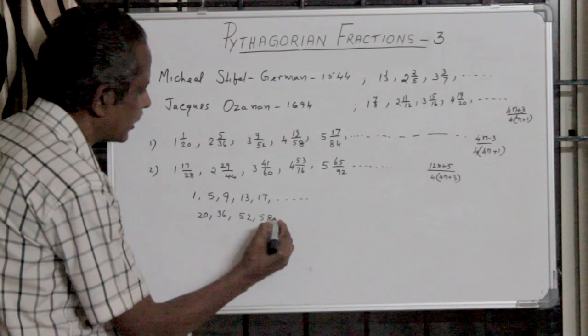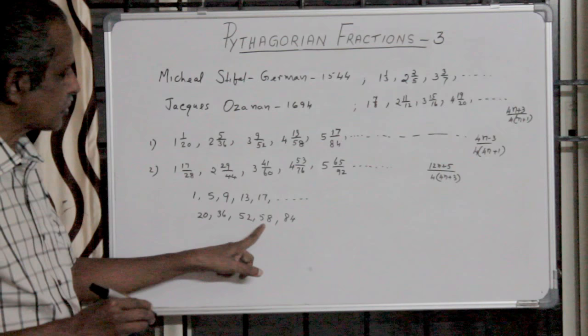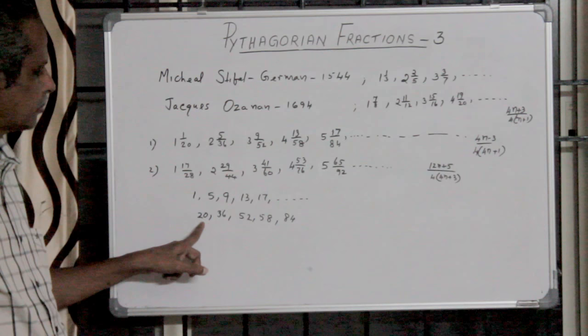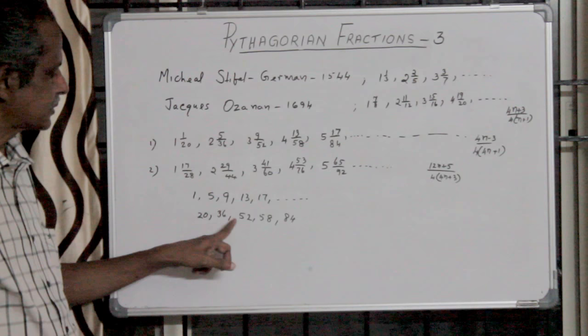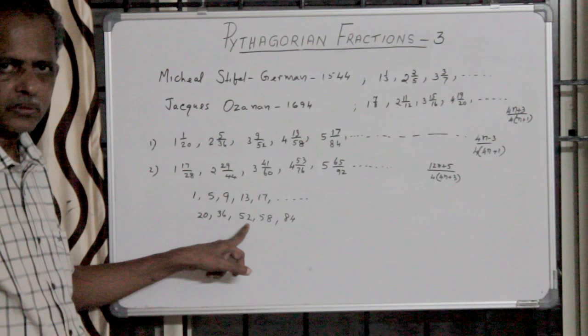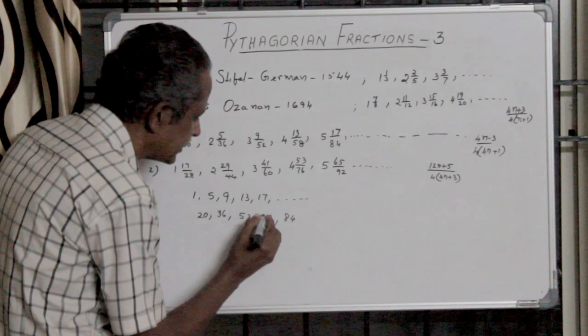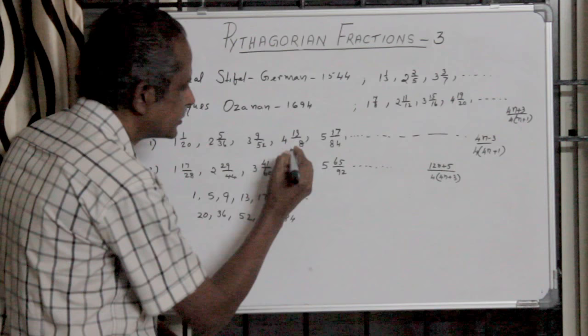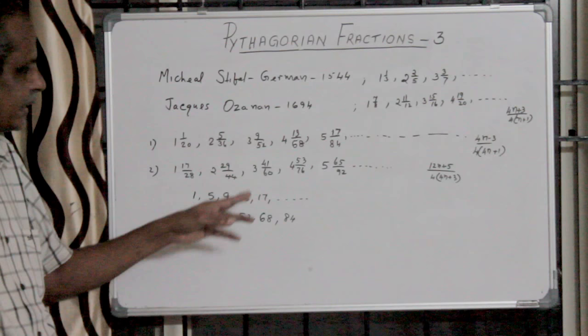I have told you, this 58 is wrong. 20 plus 16 is 36, 36 plus 16 is 52, 52 plus 16 is not 58 but 68. So this is cleared as 68, and here also 68.